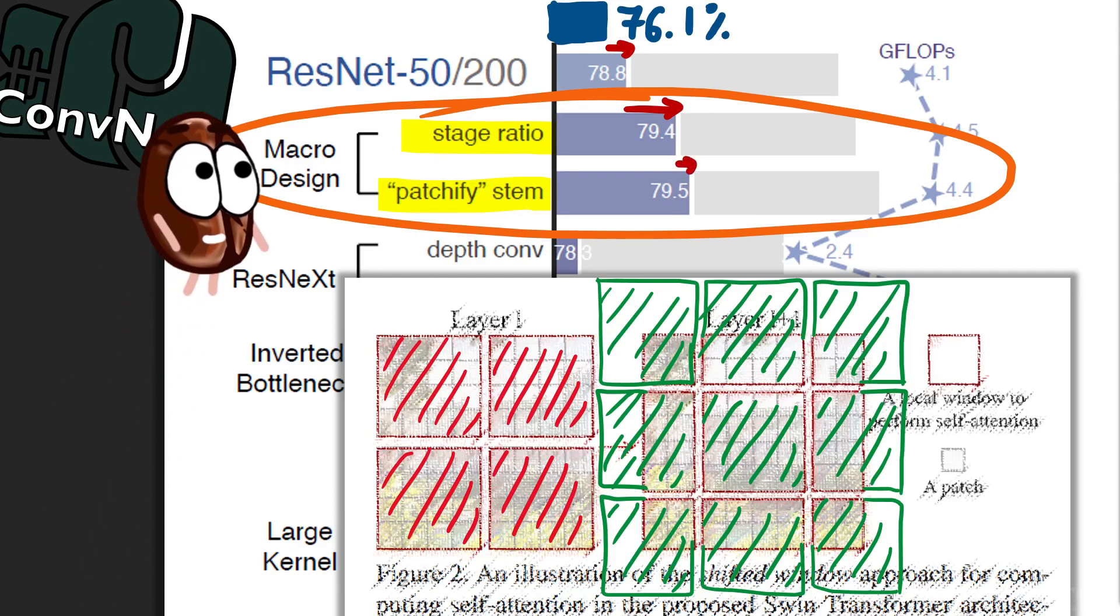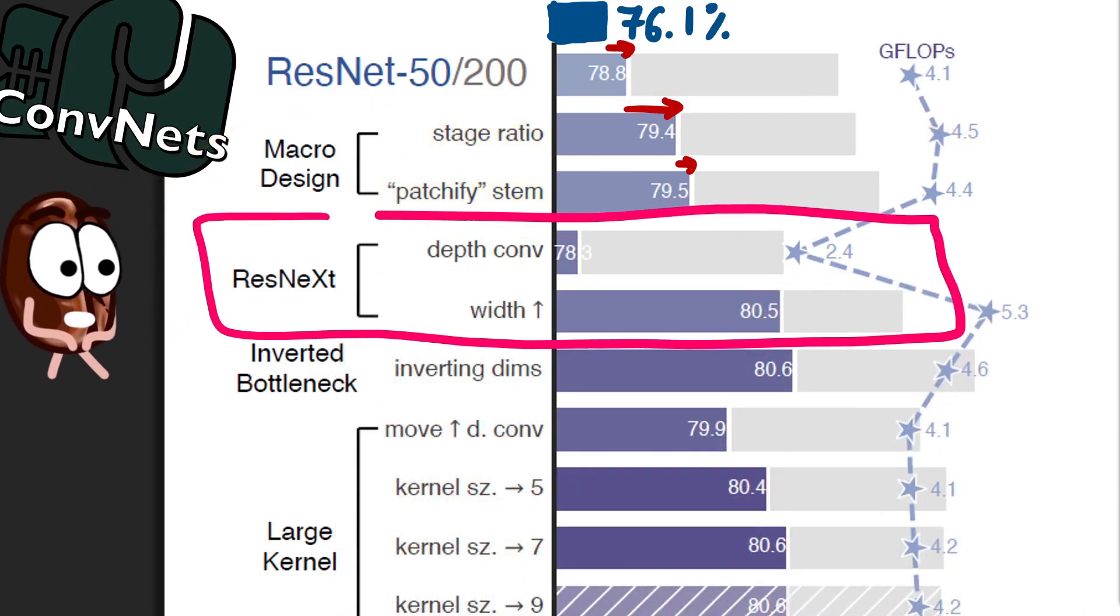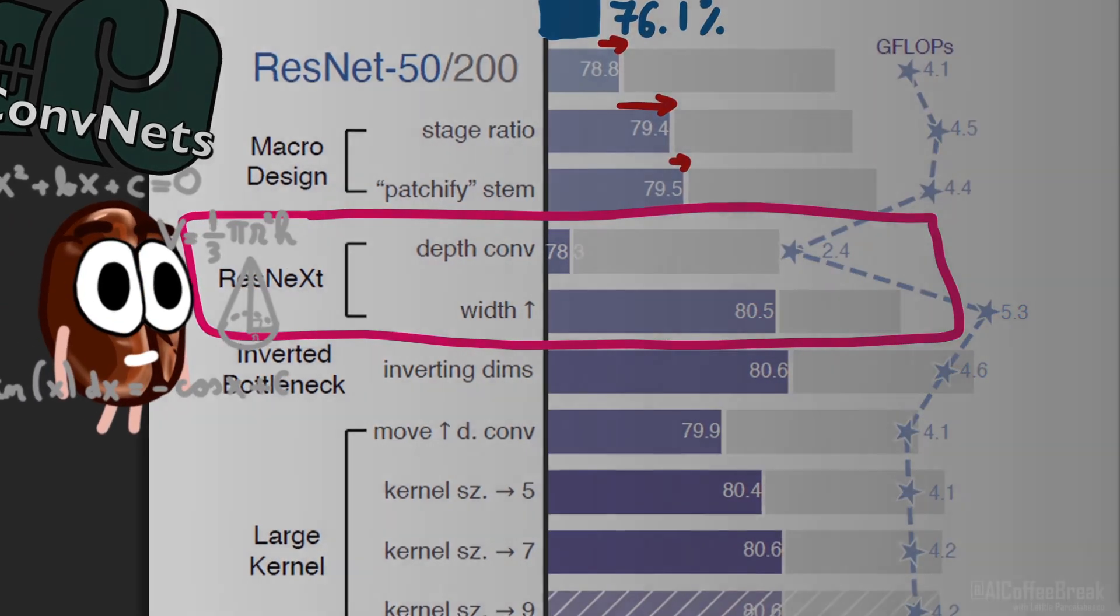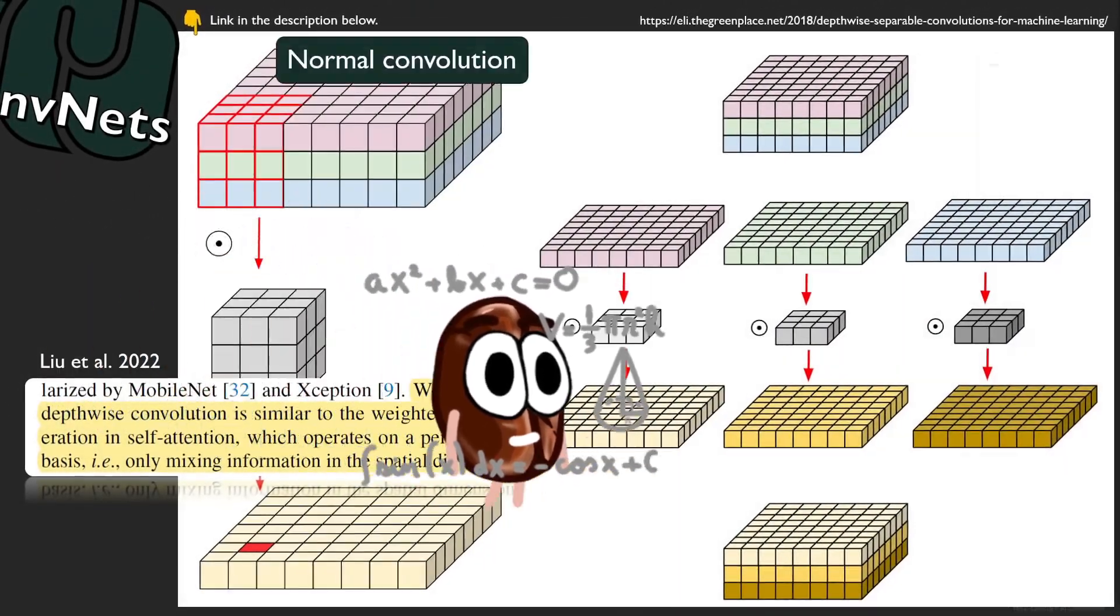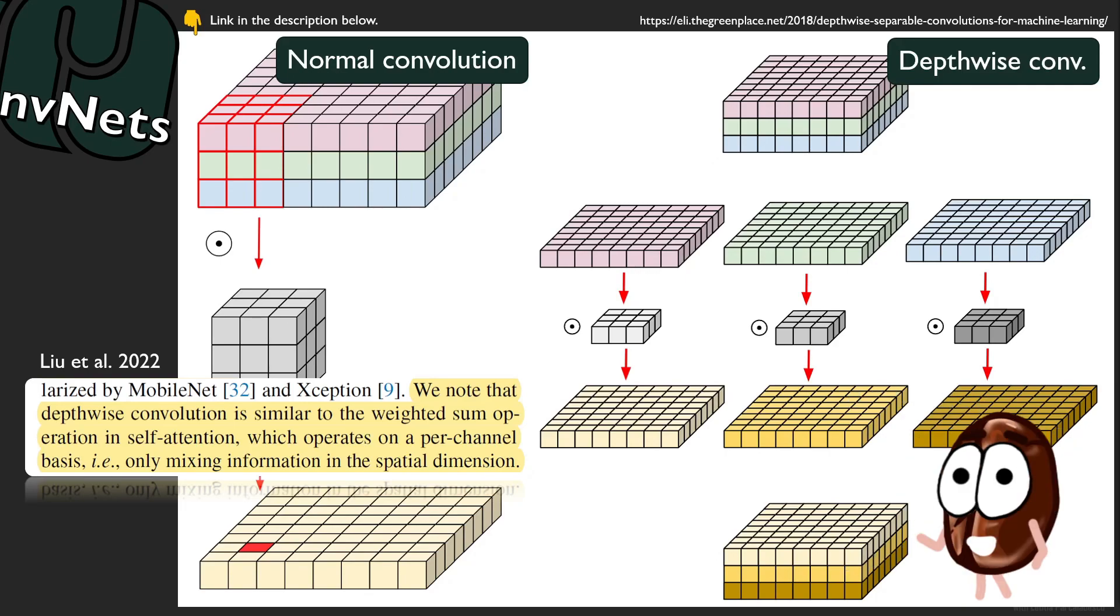The third stage adopts the idea that ResNeXt had introduced before, namely the idea of inception, if you are old enough to remember that, of splitting, transforming and merging information. The key word here is depthwise convolutions, a special case of grouped convolutions, where the number of groups equals the number of channels. Important to note and here recite from the paper is that depthwise convolution is similar to the weighted sum operation in self-attention, which operates on a per-channel basis, that is, only mixing information in the spatial dimension, end quote.